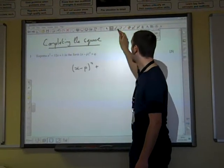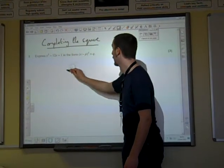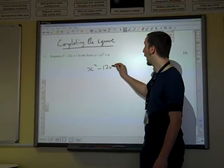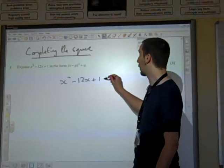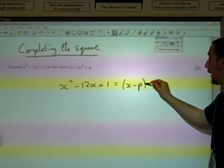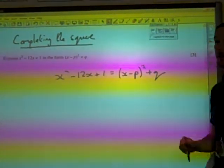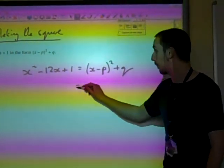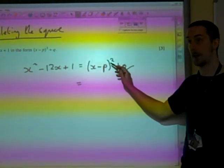Actually I want that to be the other side. We're just going to compare coefficients. We want x² - 12x + 1 to look like (x - p)² + q. So just to keep it simple, we'd expand this, see what that looks like.